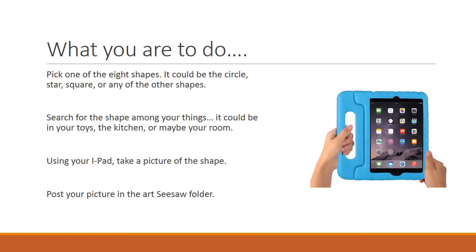Here is what you are to do. Pick one of the eight shapes. It could be the circle, star, square, or any of the other shapes. Search for the shape among your things. It could be in your toys, the kitchen, or maybe your room.